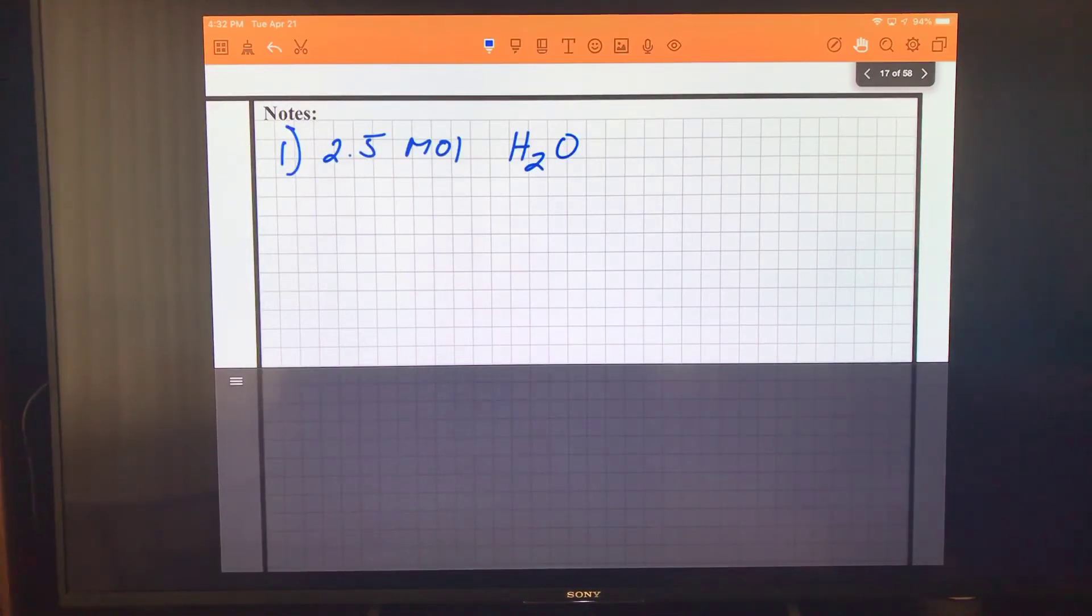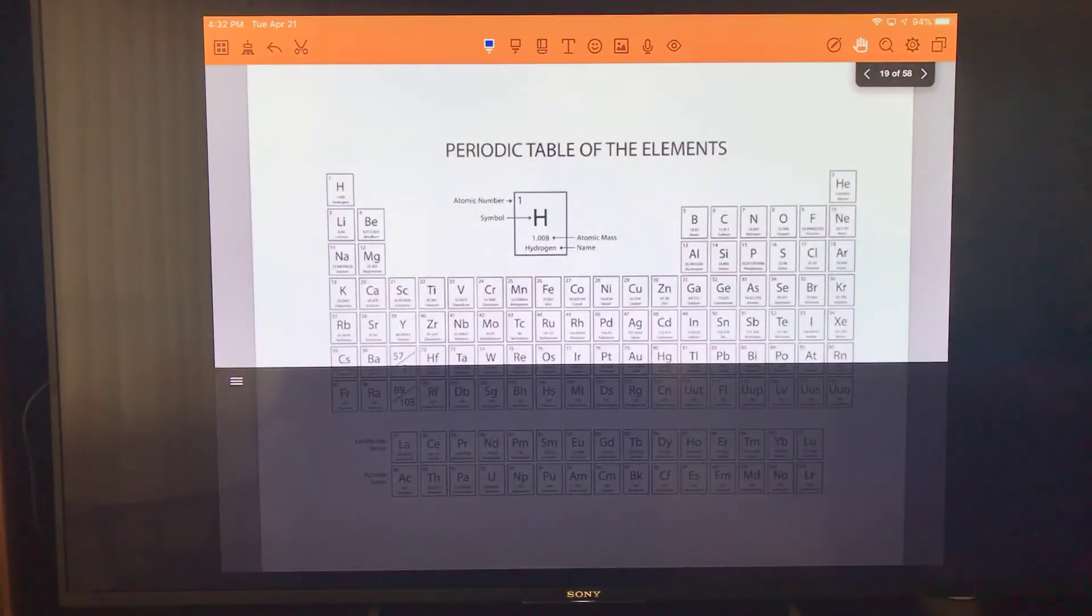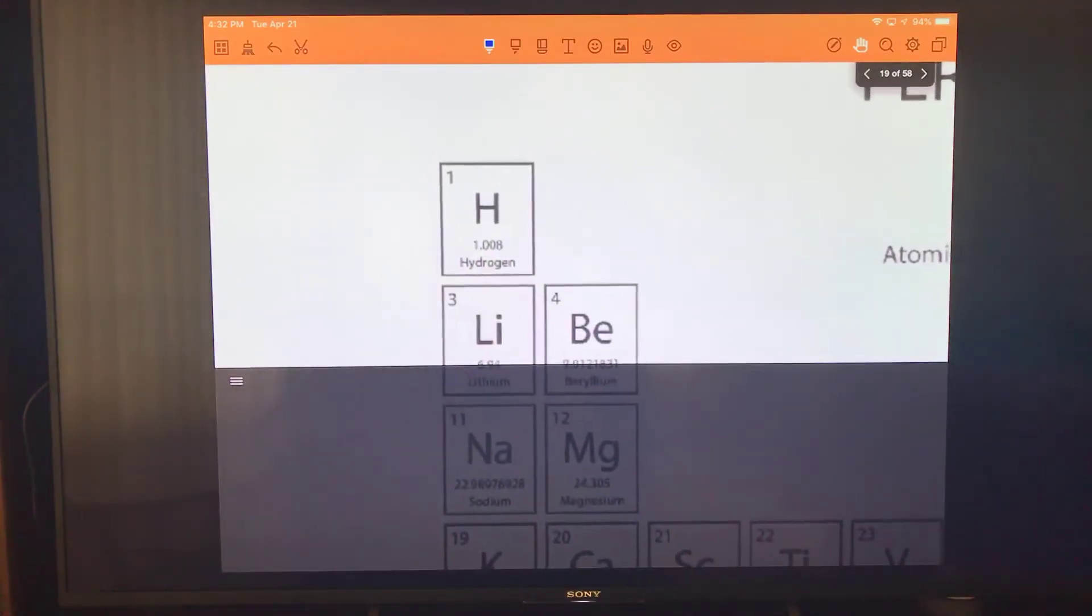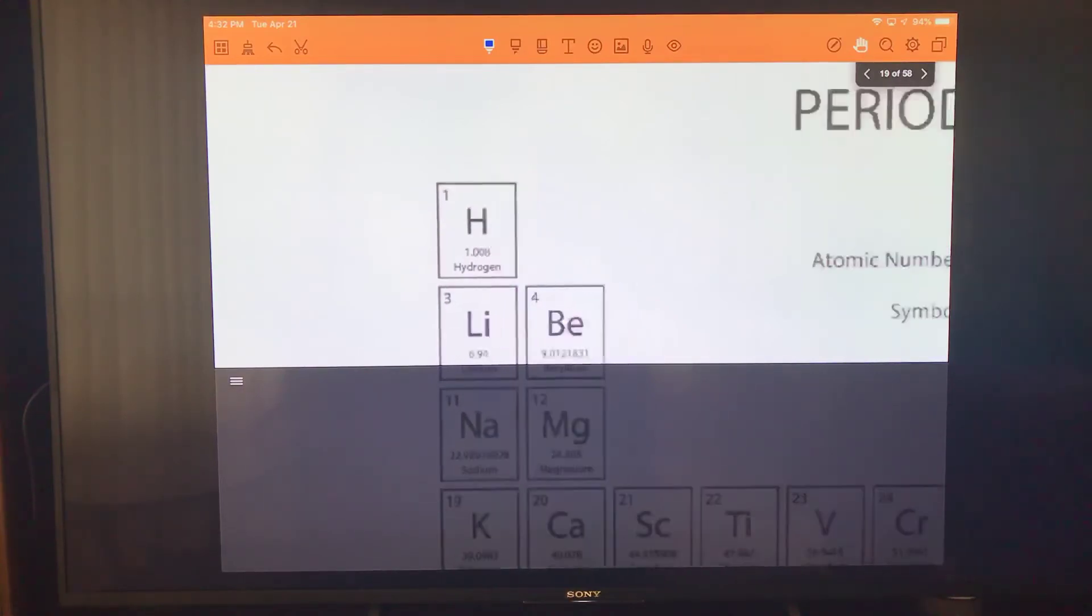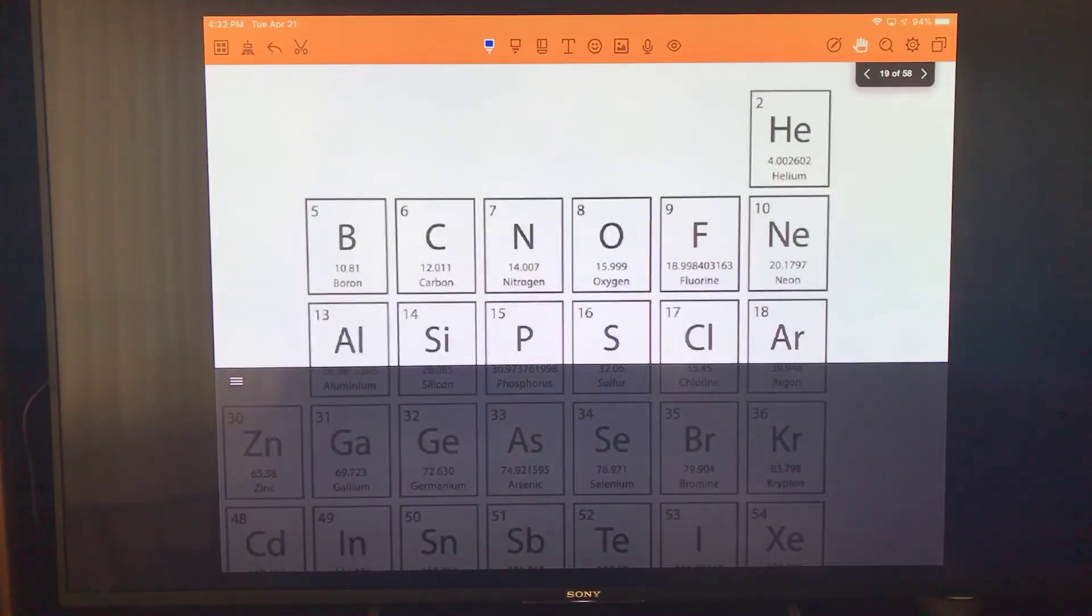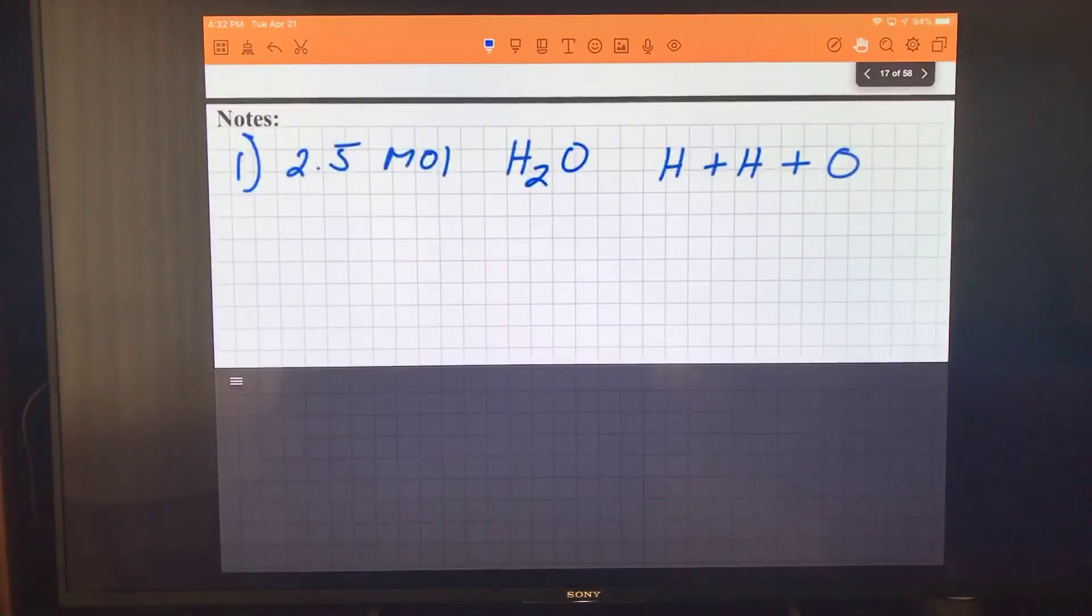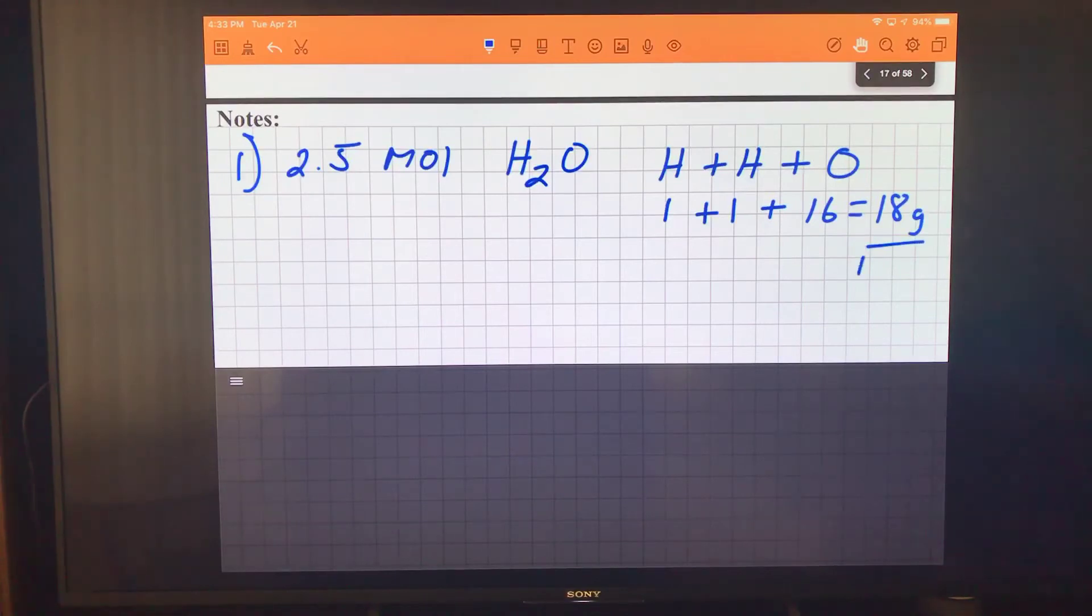H2O, we have two H's and we have one oxygen. If we look over to our periodic table, hydrogen has a mass of one, we're going to round it to one. And oxygen has a mass of 15.999, and we're going to round that one to 16. All right, we'll keep that in mind.